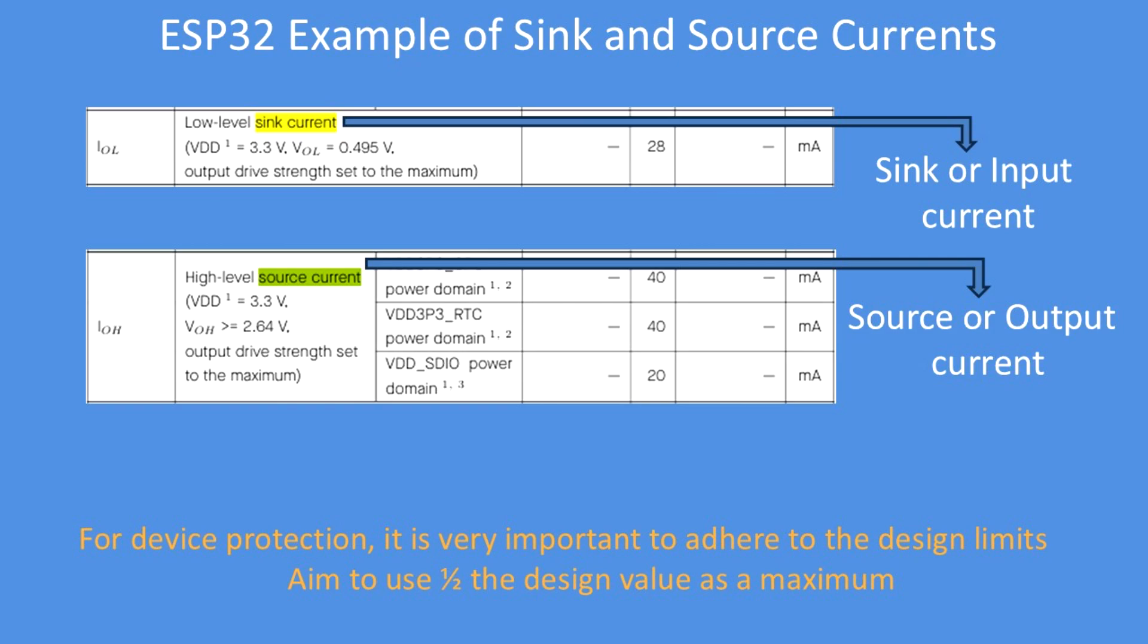When you're interfacing a microcontroller to external circuitry, there are two parameters that are extremely important for device protection. One is the sink current, that's the ability of the chip to input current, and the other is source current, the ability to output a current to a load.